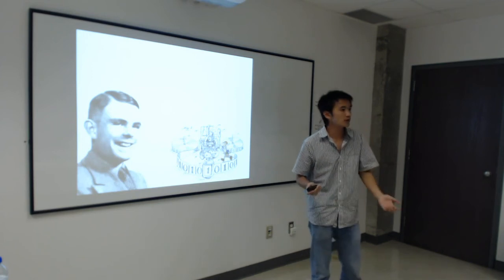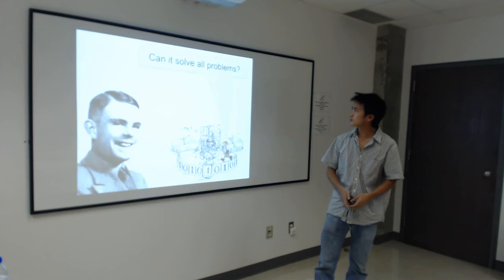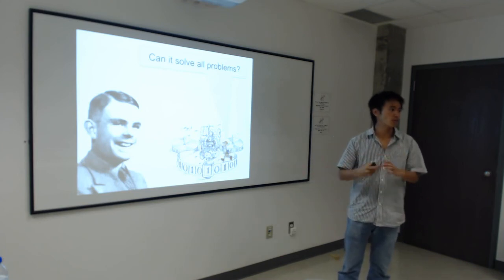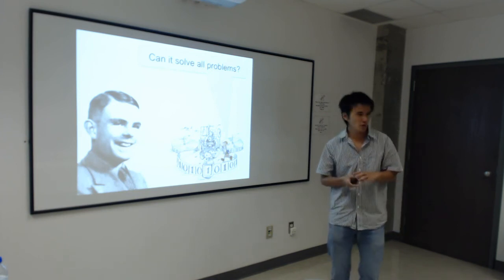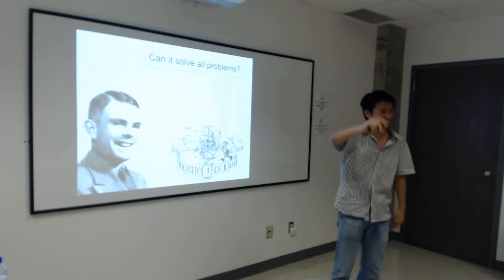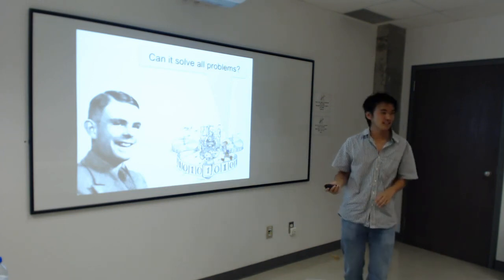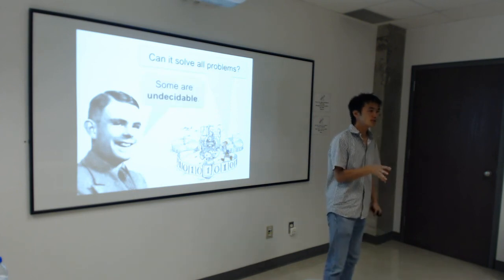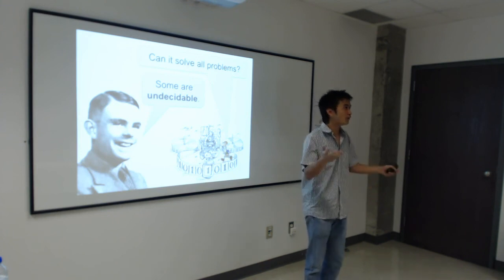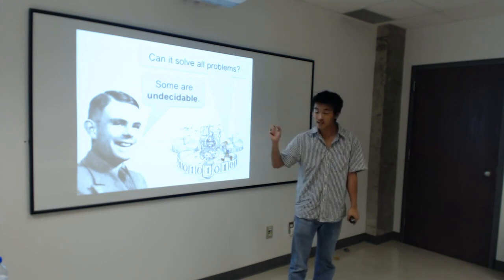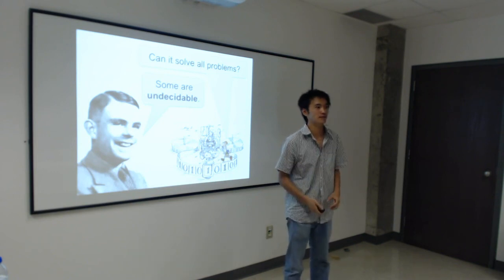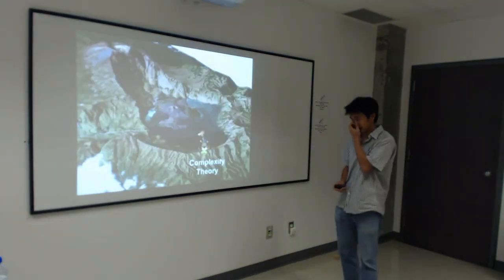Alan Turing was more interested in the theoretical question than the applied one. He wondered whether this very powerful yet very simple mechanical machine could solve all problems. The answer is that it can't. There are problems which are undecidable — meaning there's no machine that always solves them, no systematic way of solving them. Unfortunately, or fortunately, at the very core of mathematics there is a problem that's undecidable: the problem of finding proofs to theorems. There's no systematic way to find a proof to a theorem. And this leads to another very interesting question.